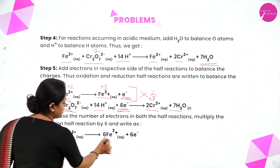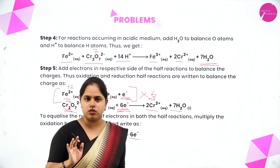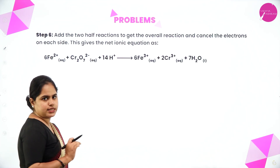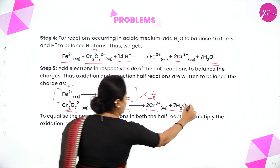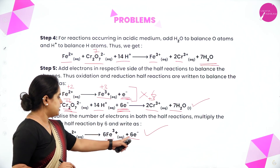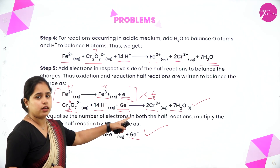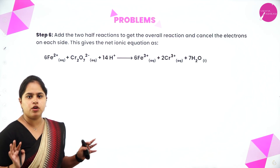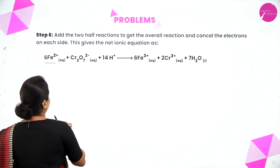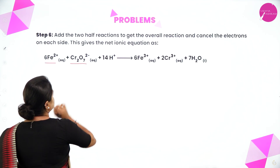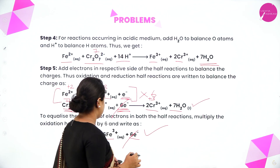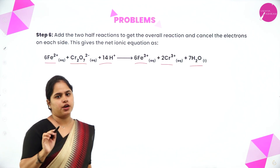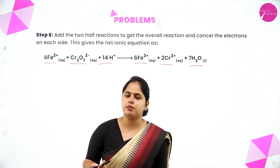Now add the two half reactions to get the overall reaction and cancel the electrons on each side. The 6 electrons on the product side of the oxidation half reaction and the 6 electrons on the reactant side of the reduction half reaction cancel out. The final balanced redox equation is: 6Fe²⁺ + Cr₂O₇²⁻ + 14H⁺ → 6Fe³⁺ + 2Cr³⁺ + 7H₂O. This is the balanced redox reaction in acidic medium.